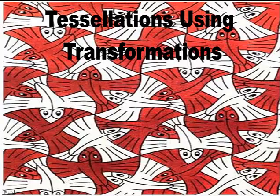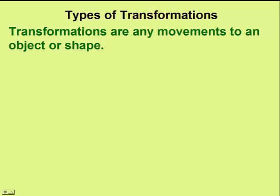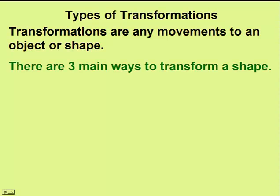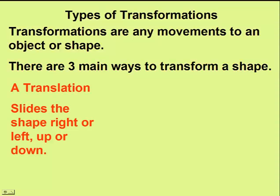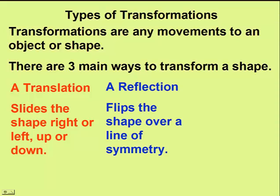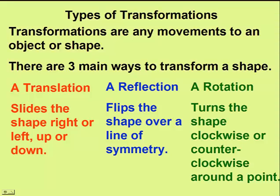In this lesson on tessellations using transformations, we'll talk about the three different types of transformations and how each one can be used to form its own unique brand of tessellations. Transformations are any movements to an object or shape. There are three main types: a translation, where an object is slid left, right, up, or down; a reflection, where the shape is flipped over a line of symmetry; and a rotation, which turns the shape clockwise or counterclockwise around a point.